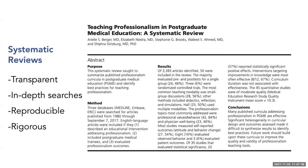Then you have systematic reviews. These are a research methodology unto themselves. They tend to be very transparent in their methodology, they have very in-depth searches, they are reproducible, and they're supposed to tell you how they searched and where they searched. They are a rigorous methodology.